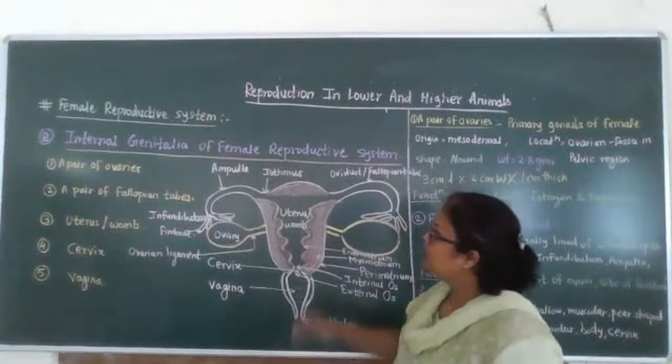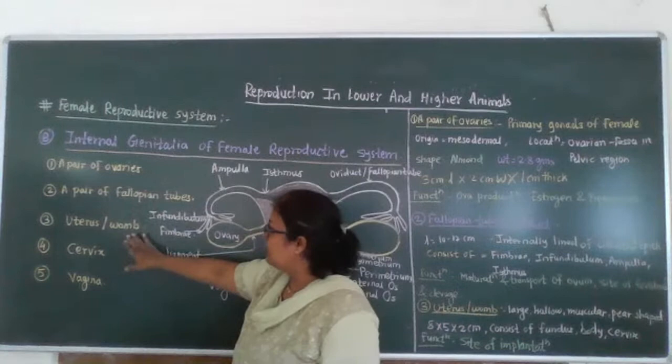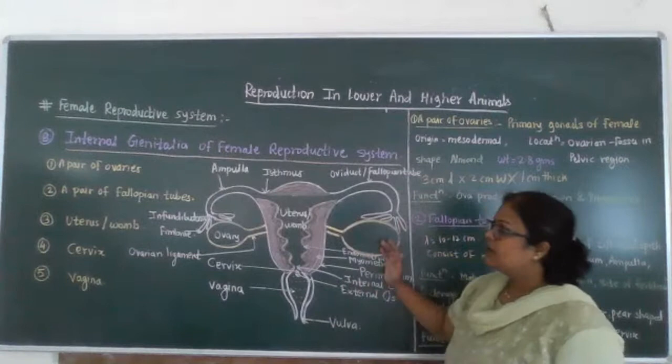Hello everyone. In today's video, we are going to study the internal genitalia of the female reproductive system. The internal genitalia of the female reproductive system consists of a pair of ovaries, a pair of fallopian tubes, a uterus or womb, cervix, and a vagina.